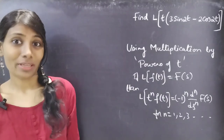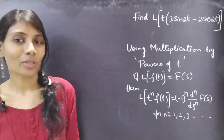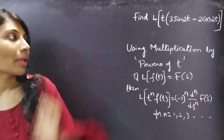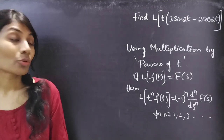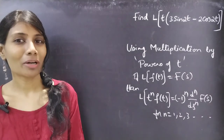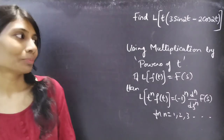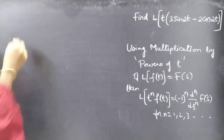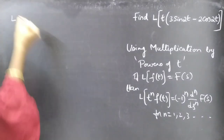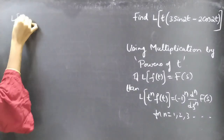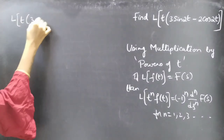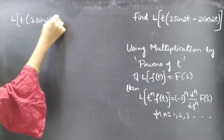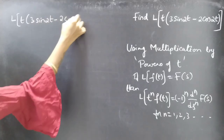Hello everyone, this is Jay Kalpana here. In this video we are going to see a problem from Laplace transform using multiplication by power of t. We are asked to find L of t times 3 sin(2t) minus 2 cos(2t).